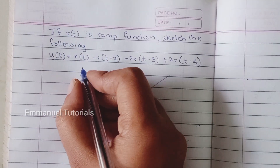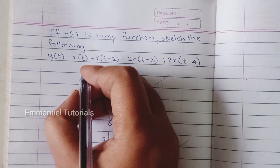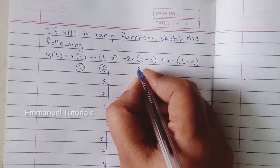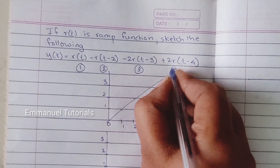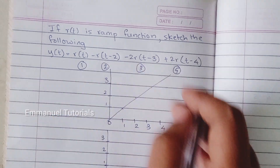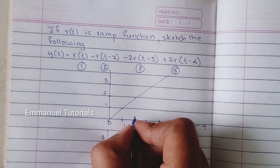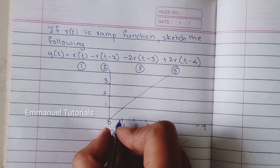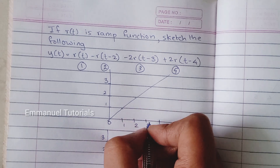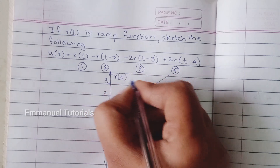The question says: if R(t) is the ramp function, sketch the following — and we have four parts to the resultant which is required. Let's split it so that it becomes easier for us to draw. The first part is easy; it's just the ramp signal R(t) as it is. The amplitude equals T at each instance of T: at T=0 it's 0, T=1 it's 1, T=2 it's 2, T=3 it's 3, and so on.